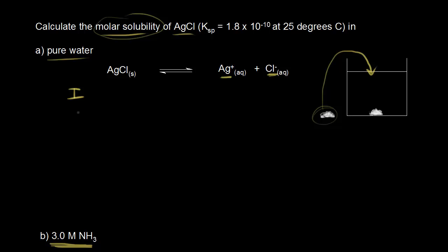So our initial concentrations, our change, and finally our equilibrium concentrations. Before we put the silver chloride in, we didn't have any ions in solution. So the initial concentrations of our products are zero. Some of the silver chloride that we put in dissolved, so we lost a certain concentration of our silver chloride, and we're going to call that x.